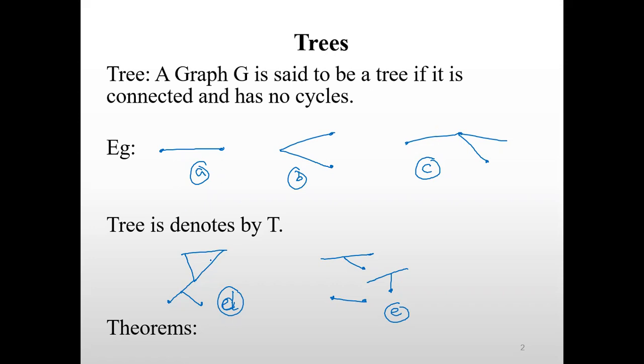But if you consider the fourth graph, that is graph D, here it is a connected graph but it contains a cycle. So this can't be considered as a tree.